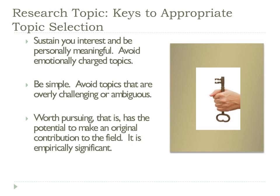Another consideration is to make sure that you select a topic that sustains your interest and is personally meaningful to you. However, you need to make sure that it's not too emotionally charged. For example, if you are very interested in children with autism and you have a nephew with autism, that topic is probably near and dear to your heart. You may not be willing and able to accept criticism about it, and it's really important — especially for the dissertation process — that you be able to accept criticism and constructive feedback about your writing and your manuscript. Make sure it sustains your interest, but it's not too emotionally charged.